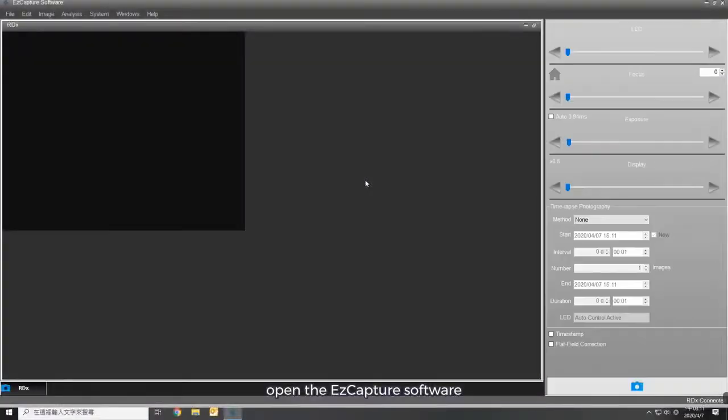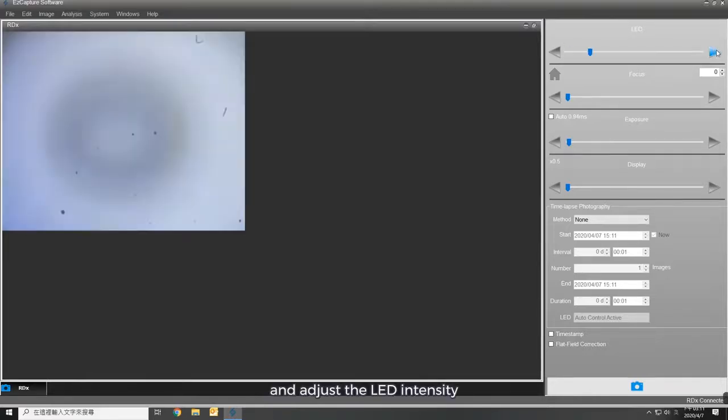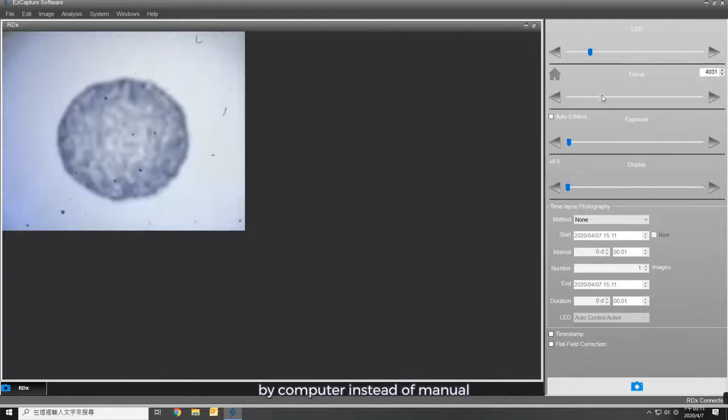Open the EZCapture software, put the sample on the stage, and adjust the LED intensity. Adjust motorized focus, which is controlled by computer, instead of manual.